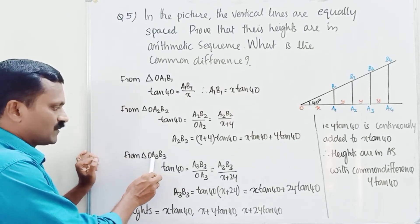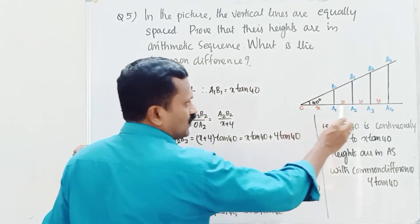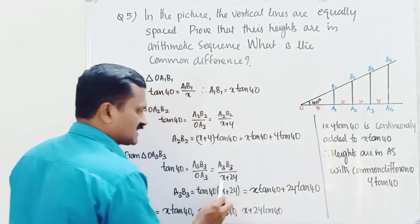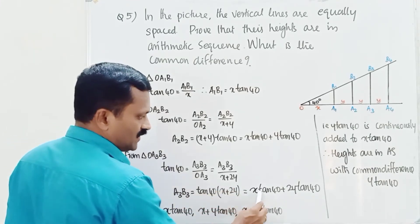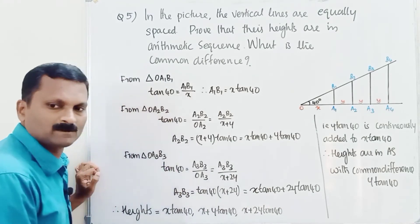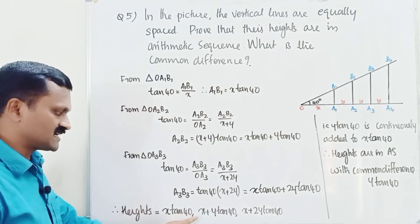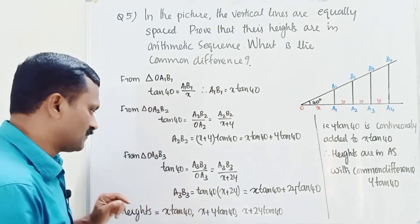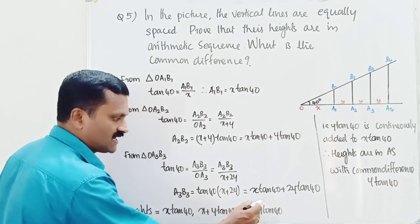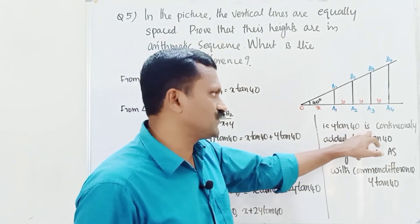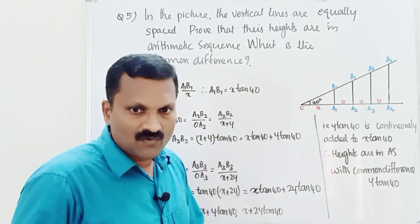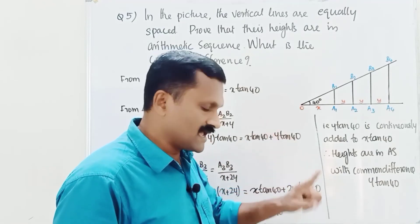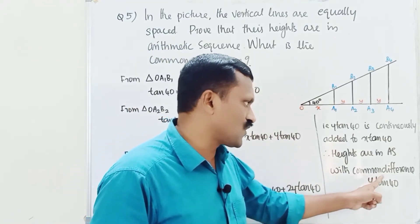Consider the third right triangle OA3B3: tan 40 equals A3B3 divided by OA3. OA3 equals x plus y plus y, that is x plus 2y. Taking cross multiplication, A3B3 equals x·tan 40 plus 2y·tan 40. So the heights are x·tan 40, (x+y)·tan 40, (x+2y)·tan 40, and so on. Since y·tan 40 is continuously added, this is an arithmetic sequence with common difference y·tan 40.